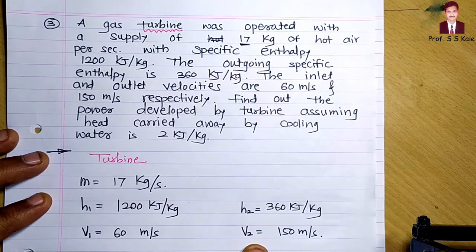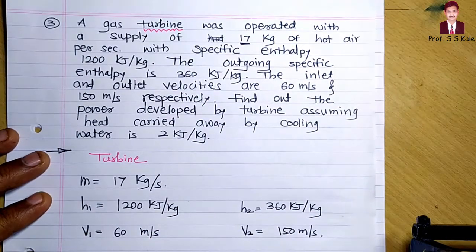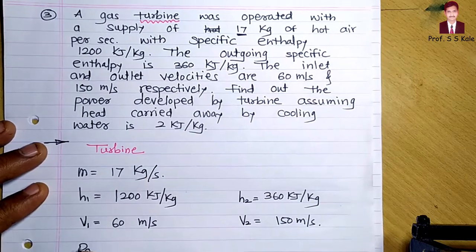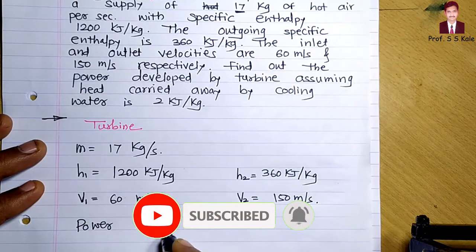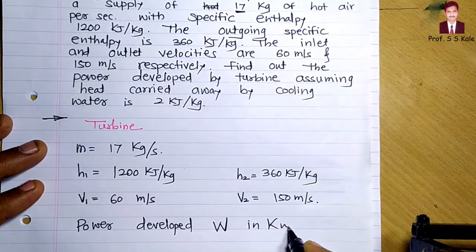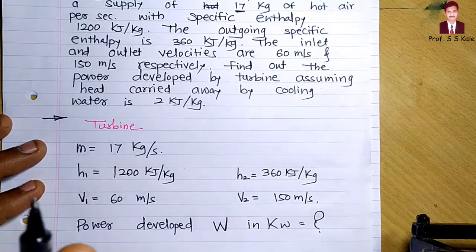V1 is the inlet velocity of gas and V2 is the exit velocity of gas to the turbine. We have to find out the power developed by the turbine — that is the work output, generally measured in kilowatt. Additionally, they have given that heat carried away by cooling water is 2 kilojoule per kg.